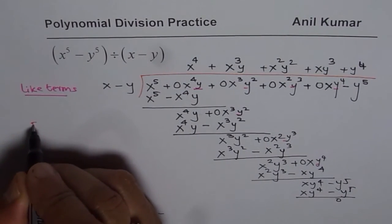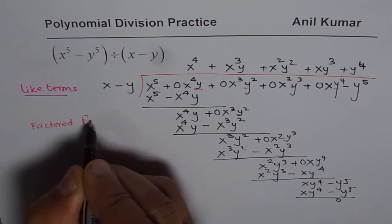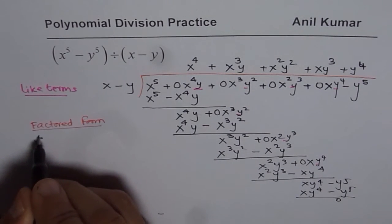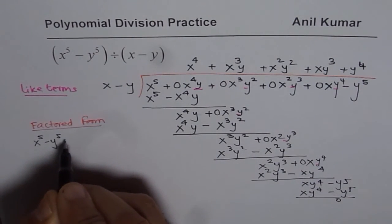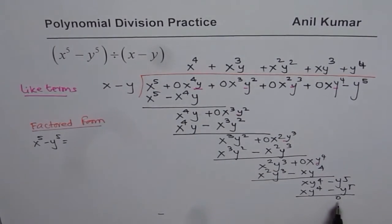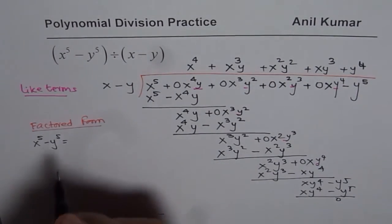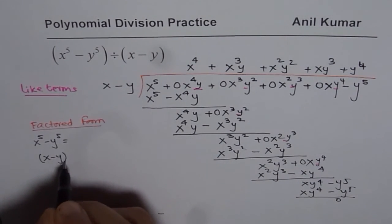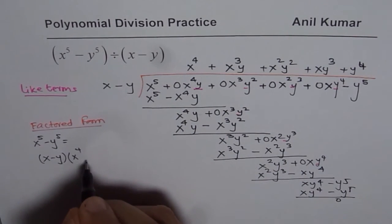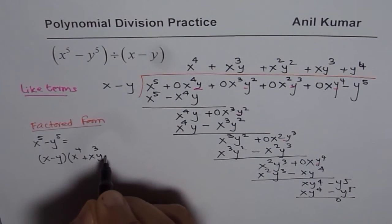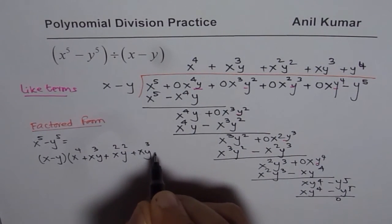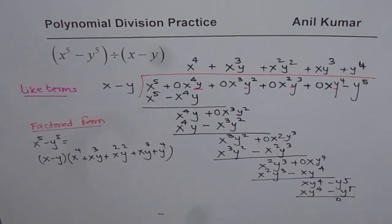This time let me write this division in factored form. I'll write x to the power of 5 minus y to the power of 5. Since the remainder is 0, x minus y is a factor. This equals x minus y times x to the power of 4 plus x cube y plus x square y square plus xy cube plus y to the power of 4. Do you see that? You can actually now factor the difference of these two variables with degree 5.